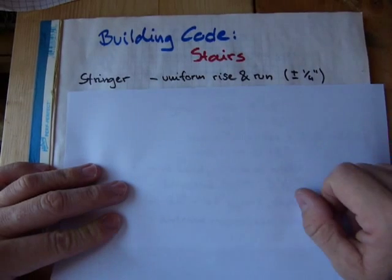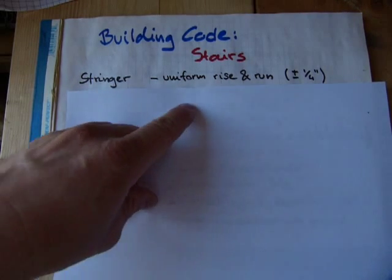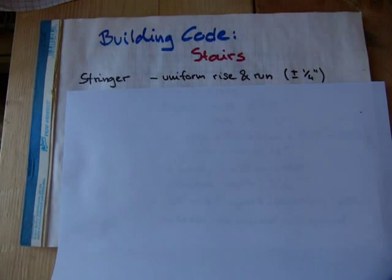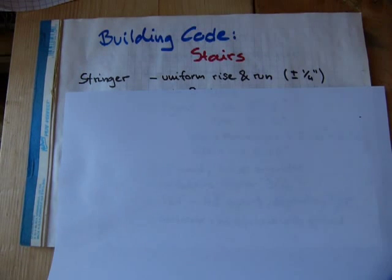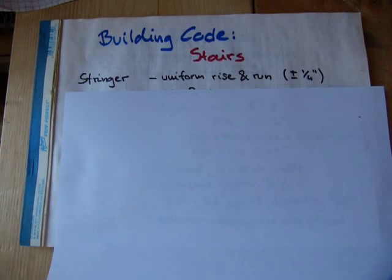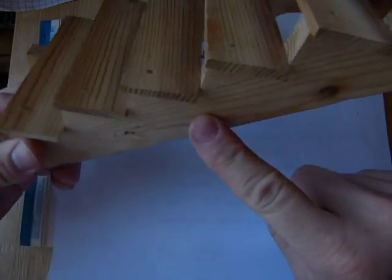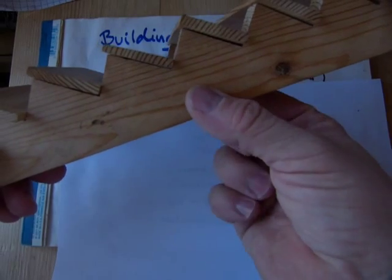The first item on my list is stair stringers. Building code requires that they do have a uniform rise and run, hence the need for a stair calculation. The plus or minus quarter inch here means that due to errors made while you're cutting and fabricating the stair, you may be off a quarter inch. The stair stringer is this part of the stair here. I have a scale model of a small set of stairs, and we're talking about this part here. This is the stringer.